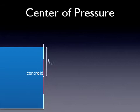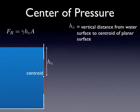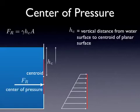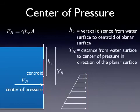We use the centroid and the distance to the centroid to calculate the magnitude of the resultant force using that equation. However, the force does not act at the centroid. Because the pressure increases with depth, that force acts at a distance somewhat lower than the centroid. We call that the center of pressure. We're going to use YR to describe it. YR is the distance from the water surface to the center of pressure, and this is in the direction of the planar surface.